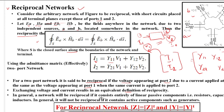In general, a network will be reciprocal if it consists entirely of linear passive components — that is, resistors, capacitors, and inductors — because these elements can be used from either side. It will not be reciprocal if it contains active components such as generators. We can say it is reciprocal if Z equals Z transpose, or Y equals Y transpose. That means the impedance or admittance matrix does not change when transposed — rows become columns and columns become rows — so Y12 and Y21 swap but the matrices remain equal.